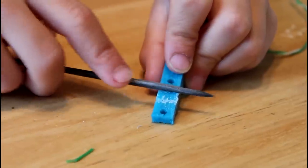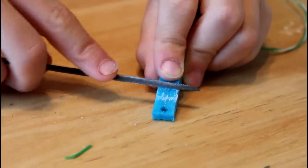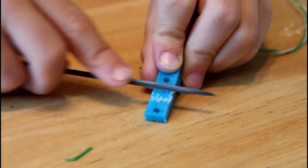File two grooves on the back of the end stop board about a half a centimeter apart to hold the paper clip in place.